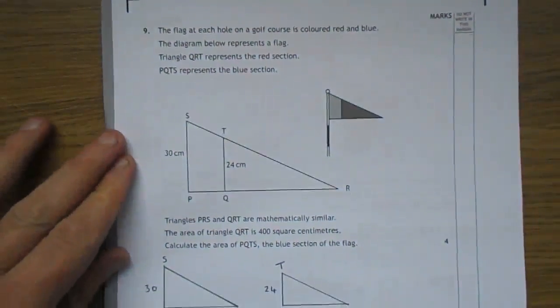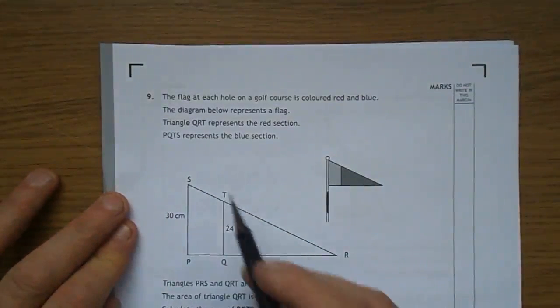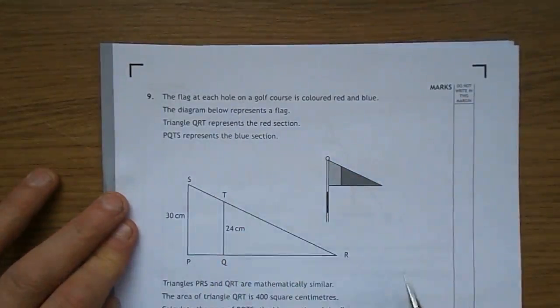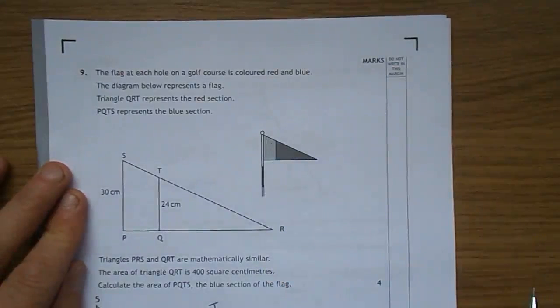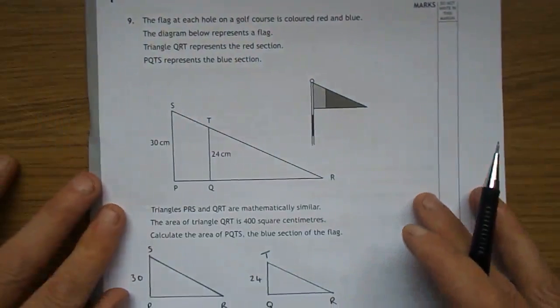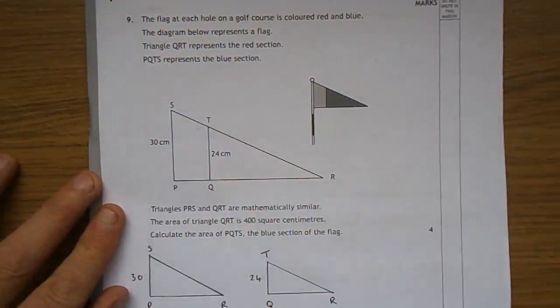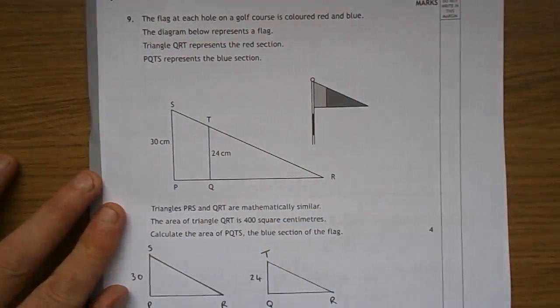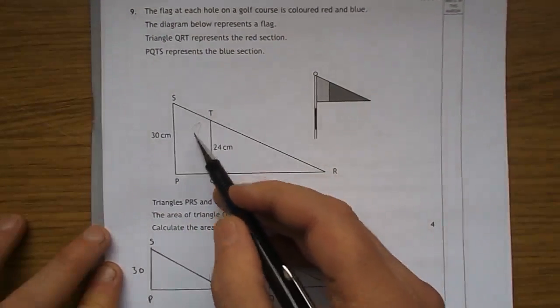On to Question 9, just flip this over. Question 9, there we have it there, just centre it. Here we have a flag and we have a bit there that they are telling you is blue. PQTS, PQTS is blue.